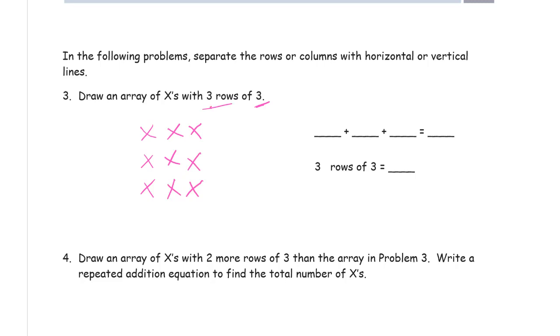And since it's rows I'm going to draw horizontal lines that separate them. So that's three threes. And that's nine. Three rows of three is nine.